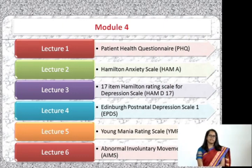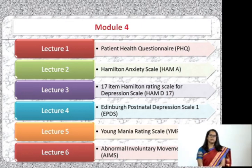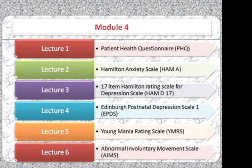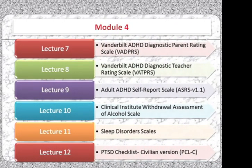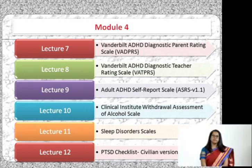The fourth module consists of all the psychiatric rating scales across twelve lectures: the Patient Health Questionnaire, the Hamilton Anxiety Scale, the 17-item Hamilton Rating Scale for Depression, the Edinburgh Postnatal Depressive Scale, the Young Mania Rating Scale, the Abnormal Involuntary Movement Scale, the Vanderbilt ADHD Diagnostic Parent Rating Scale, the Vanderbilt ADHD Diagnostic Teacher Rating Scale, the Adult ADHD Self-Report Scale, the Clinical Institute Withdrawal Assessment for Alcohol scale, the Sleep Disorder Scale, and the PTSD Checklist Civilian Version.